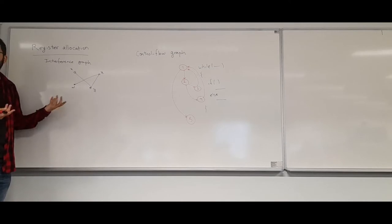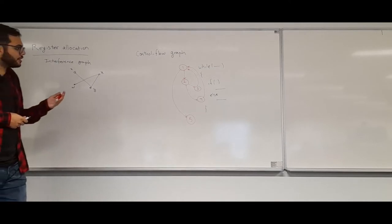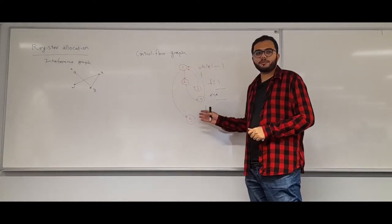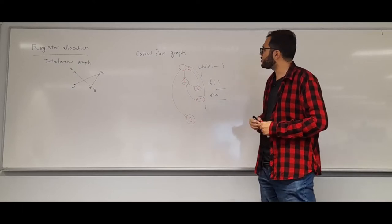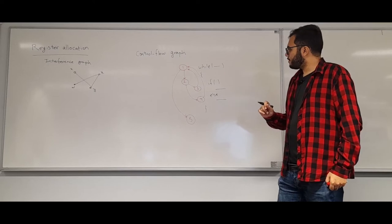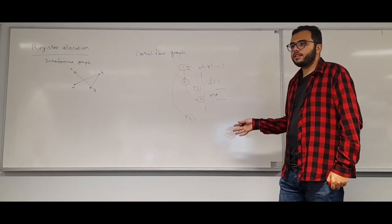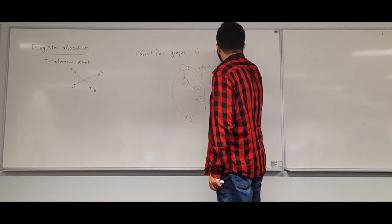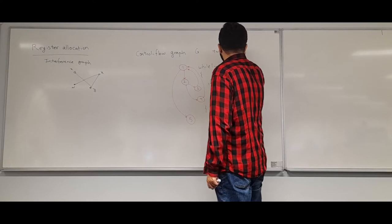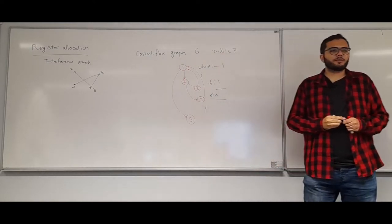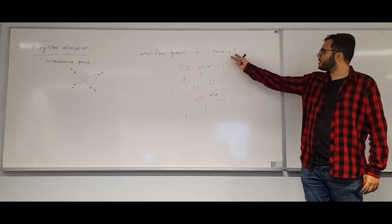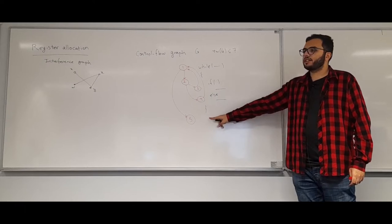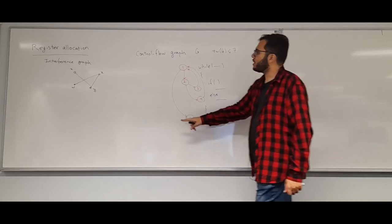This is a theorem I won't prove here, but control flow graphs have small treewidth. For every control flow graph G, the treewidth of G is at most 7. It depends on your programming language a little bit, but this is a very well-known result. So we know this graph looks like a tree — it has bounded treewidth — but we want to color the interference graph.